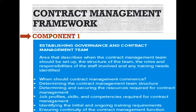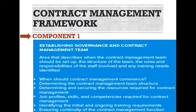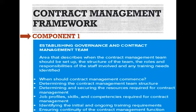This covers areas that describe when the contract management team should be set up, the structure of the team, the roles and responsibilities of the staff involved, and any training needs identified. Key questions include: when should contract management commence, determining the contract management team structure, determining and securing the resources required, job profiles, skills, and competencies required for contract management, and identifying the initial and ongoing training requirements to ensure continuity of the contract management function.